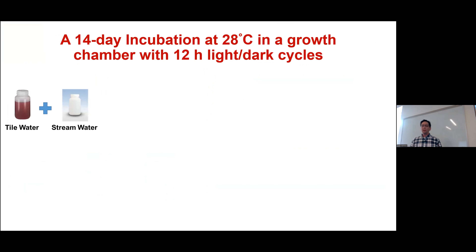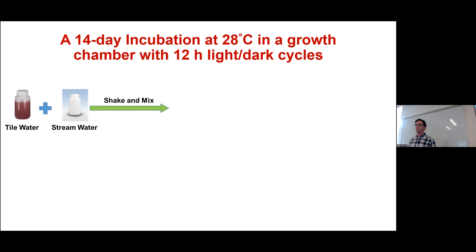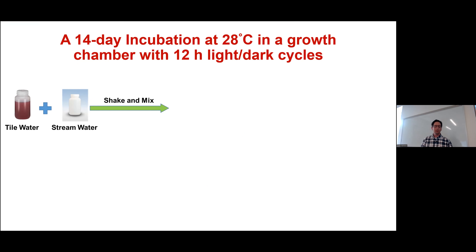We had three main hypotheses. First, that tile water from conservation management practices — including a cereal rye cover crop or restored prairie — will decrease eutrophication compared to a conventional corn-soybean rotation. I'll show the experimental setup in a bit.